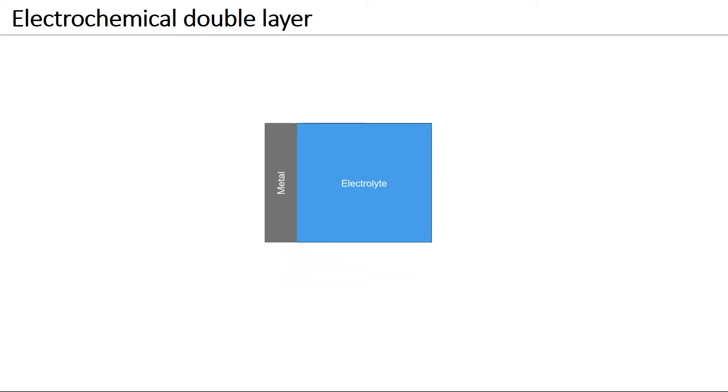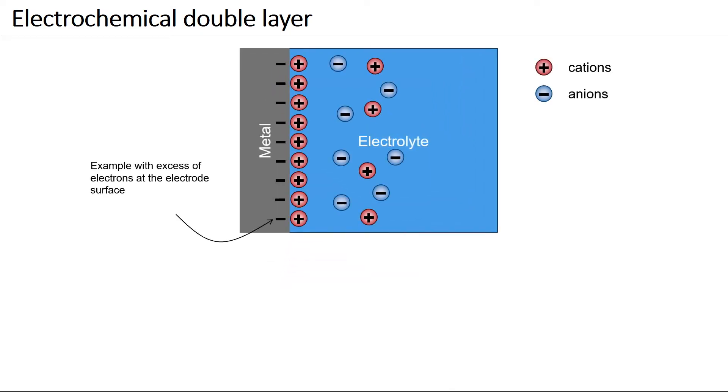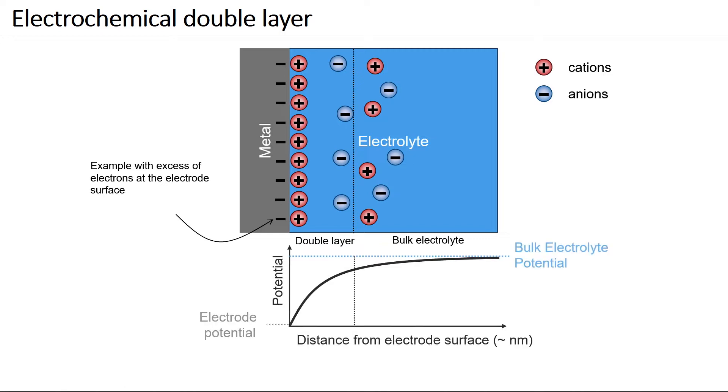When a metal is immersed in an electrolyte, two layers of opposite charges form at the interface, establishing an electrochemical double layer. Consequently, there is a potential difference between the metal and the bulk electrolyte.